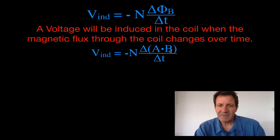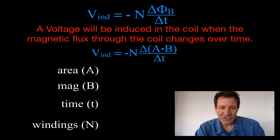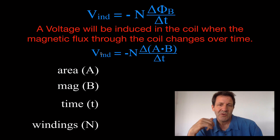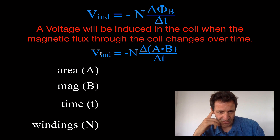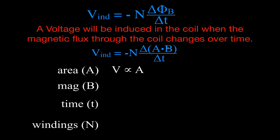So this is Faraday's Law, and you can see there are four things: the number of windings, the area, the magnetic field strength, and the time over which these changes occur. Those are the things that affect the amount of induced voltage when we change the magnetic flux through that coil. For example, the area is in the top half of the fraction — that means if I increase the area, I'll increase the induced voltage. They have a direct relationship: increase the area, increase the induced voltage.